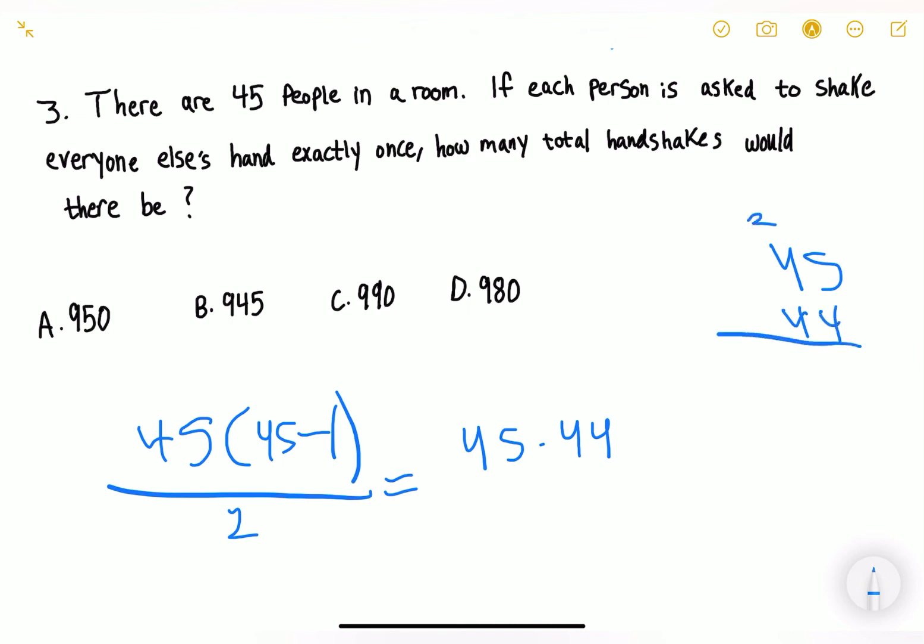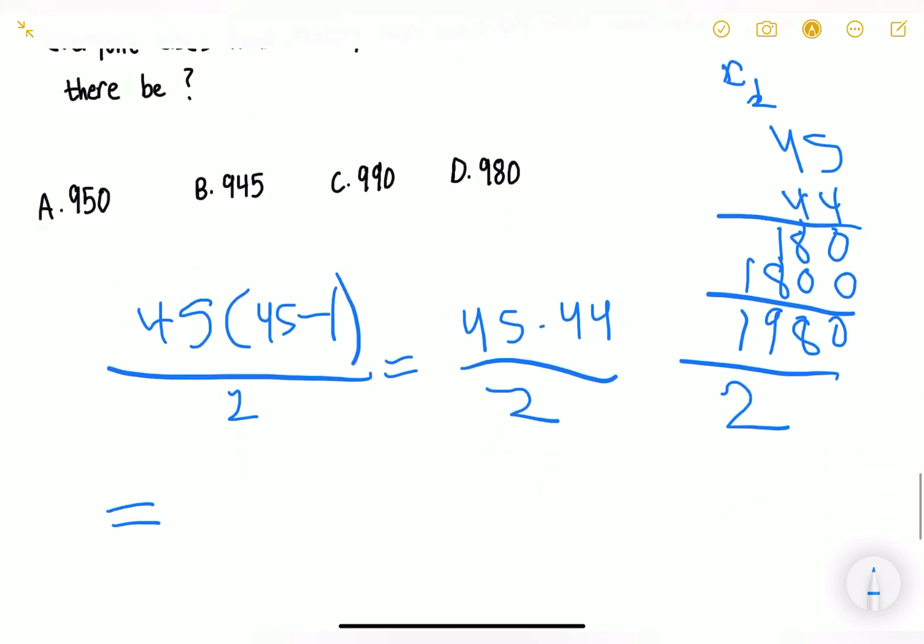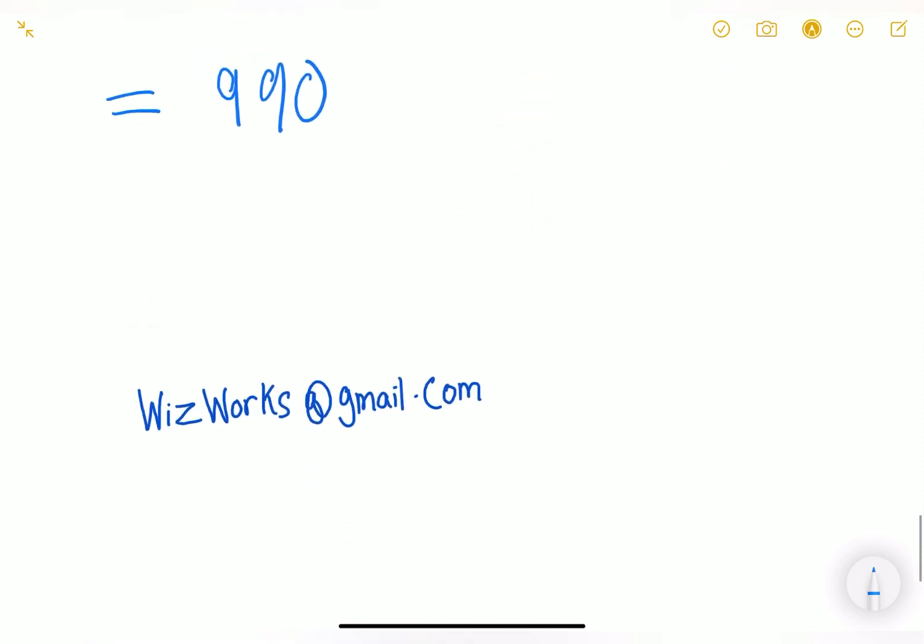What is 45 times 44? We need to do multiplication: 5 times 4 is 20, then 4 times 4 is 16 plus 2 is 18, then 4 times 5 is 20. So that gives us 1980. We divide this by 2, and 1980 divided by 2 equals 990, meaning our answer is C.